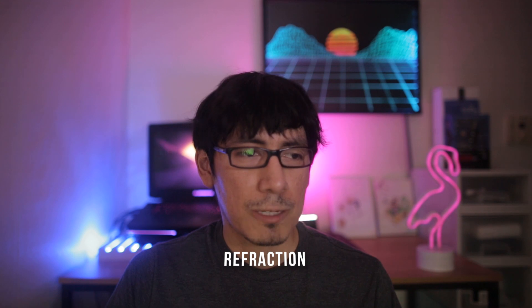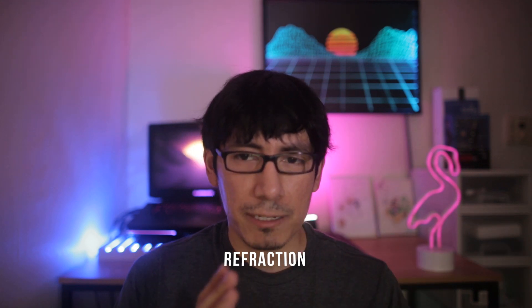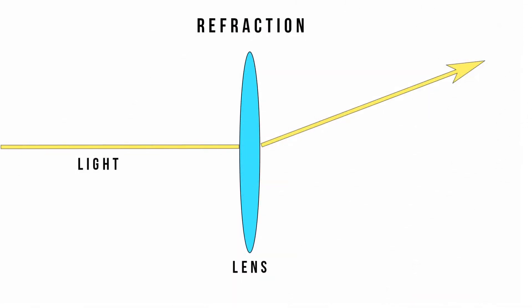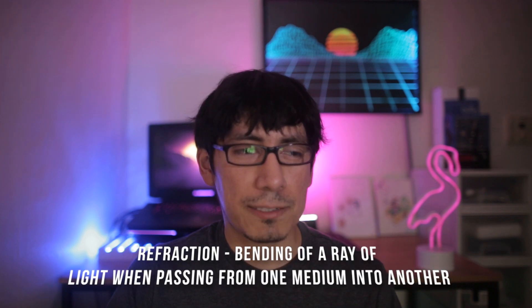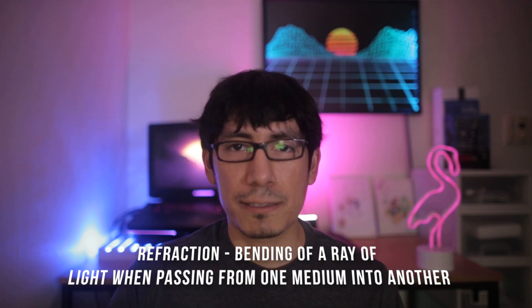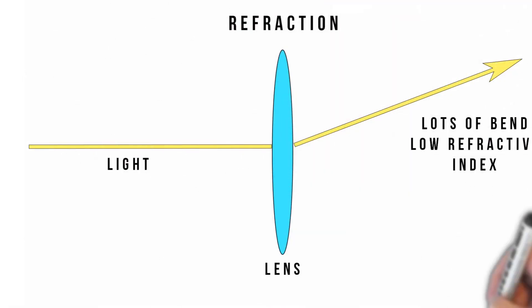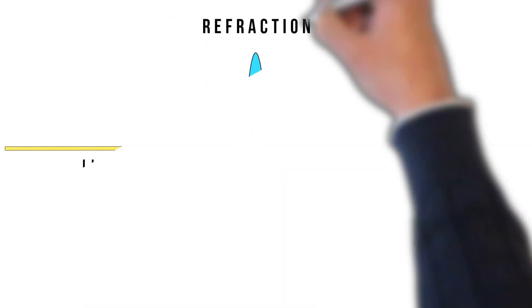Let me explain refraction. Basically, whenever light passes through something such as water, plastic, prisms, or glass, the light bends — it shoots in another direction. This is refraction. There's such a thing called the refractive index. Basically, the more a bend the light gets, the worse it is. The less the light bends, the straighter it goes — it's got a higher refractive index. Does that make sense?